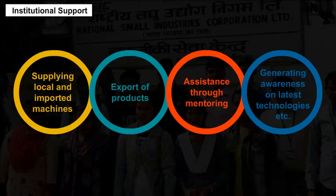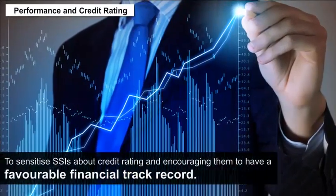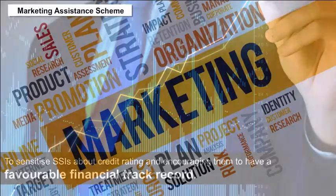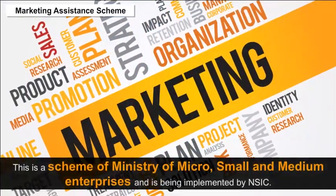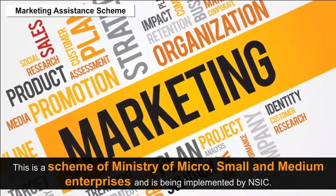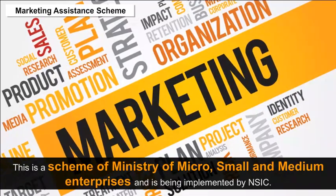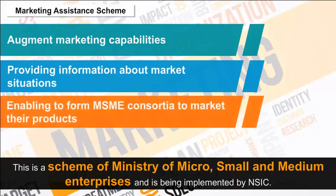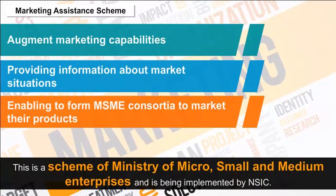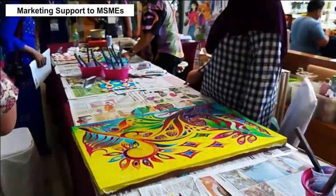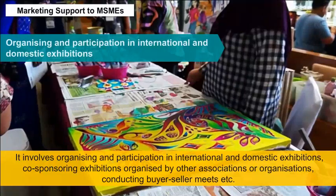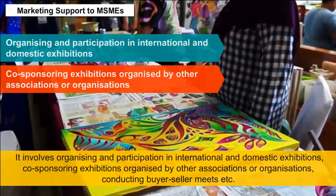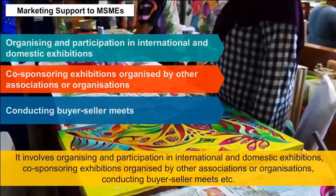Some Schemes of NSIC — Performance and Credit Rating: This sensitizes SSIs about credit rating and encourages them to maintain a favourable financial track record. Marketing Assistance Scheme: This is a scheme of the Ministry of Micro, Small and Medium Enterprises implemented by NSIC. It augments marketing capabilities, provides information about market situations, and enables forming MSME consortia. It also involves organizing participation in international and domestic exhibitions, co-sponsoring exhibitions, and conducting buyer-seller meets.